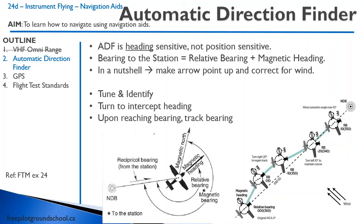You notice you're still flying heading 030 but the relative bearing has shifted to 010. That means you've been blown off by the wind. What is the bearing to station now? Add the two together: 030 plus 010 is 040. So you're 10 degrees off course. You turn back towards course.